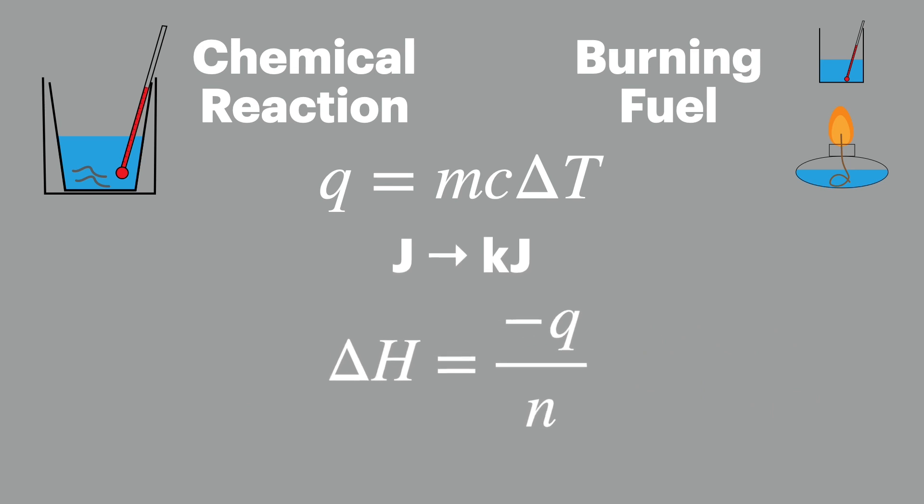So that's our three steps. First work out the energy transferred, then convert it across to kilojoules, and finish by working out the energy change per mole of the reactant, which is the enthalpy change.